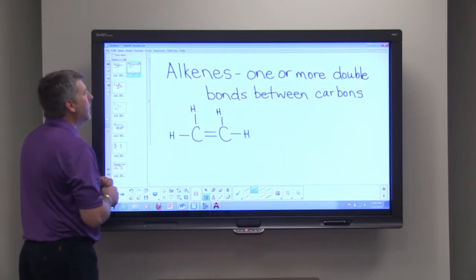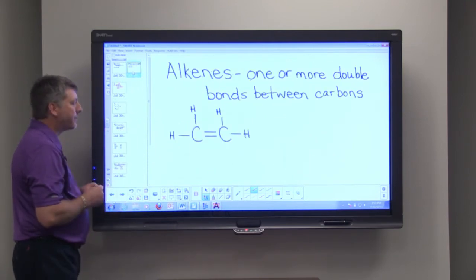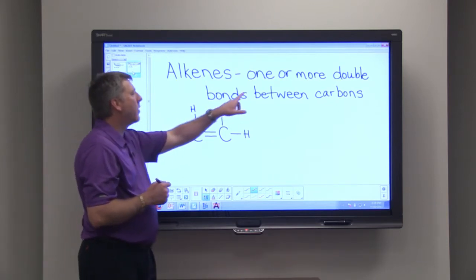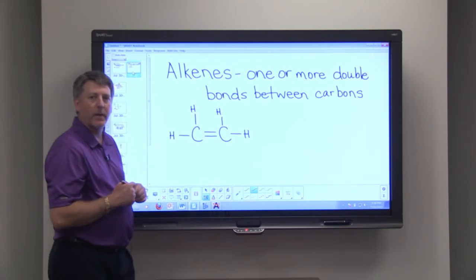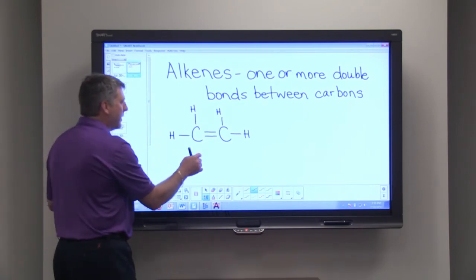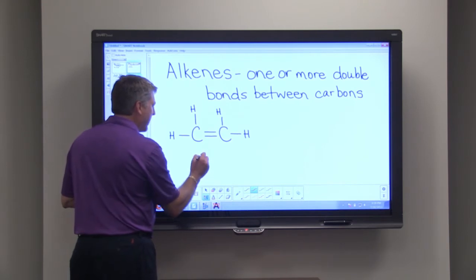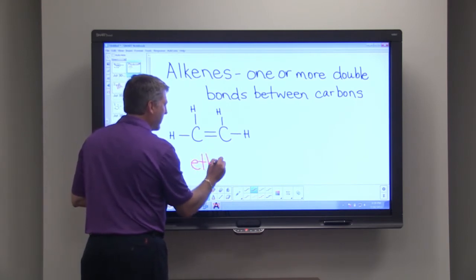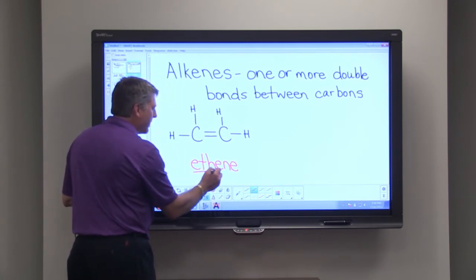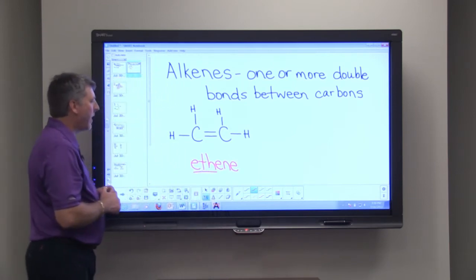Now we'll go on and look at the alkenes. Alkenes contain one or more double bonds between the carbons. And so our simplest alkene is ethene. Eth, of course, means two, so that's showing that we have two carbons.